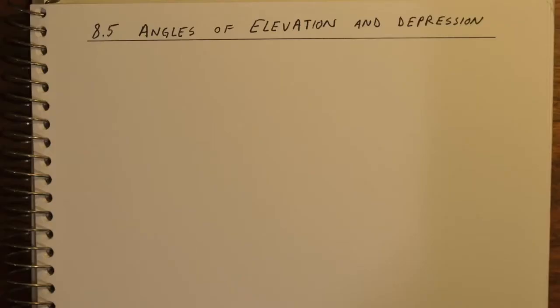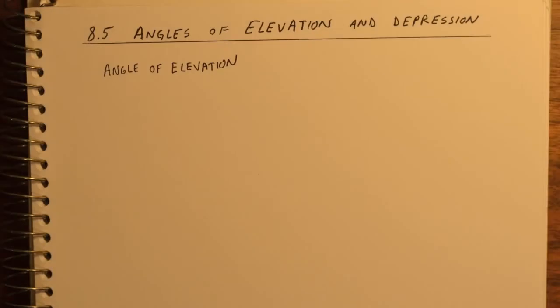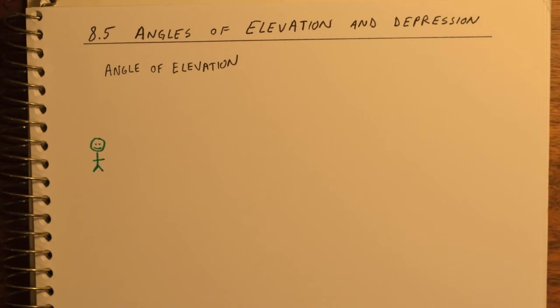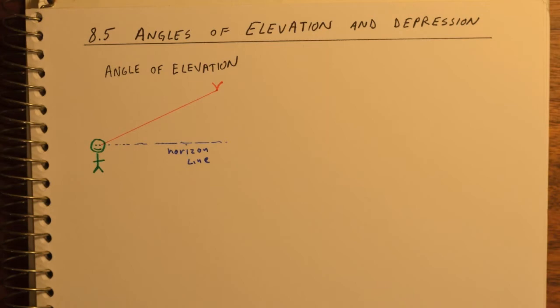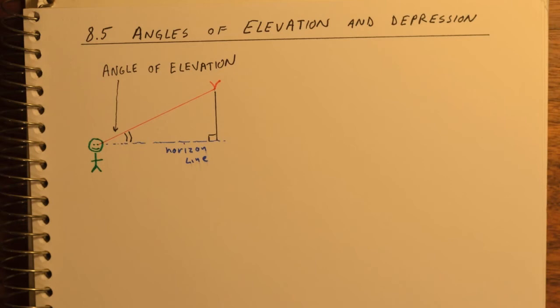An angle of elevation is always the angle made between the observer's line of sight and an object. So let's say you're looking at a bird up in the air, your eyeball to that bird creates an angle with the horizon line. That angle is the angle of elevation. We can use that angle of elevation along with the bird's altitude to solve right triangle problems using trigonometry.